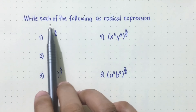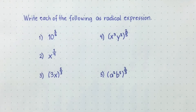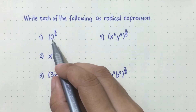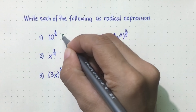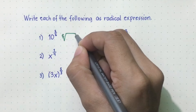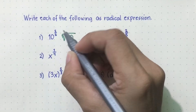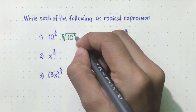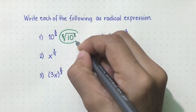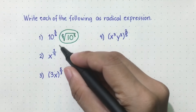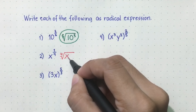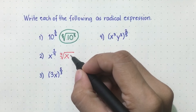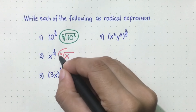How about this one? Write each of the following as a radical expression. Given the power with rational exponent, we will write it as a radical expression. Let's start with number one: ten raised to five over six. So the denominator six will be the index, then the radical sign, the base ten will be the radicand, and the numerator five will be the exponent of the radicand. Next, x raised to one-fourth: the index will be four, and the radicand will be x raised to one. But if the exponent is one, we do not have to write it, so the answer is just the fourth root of x.